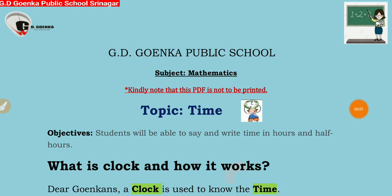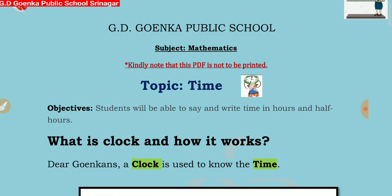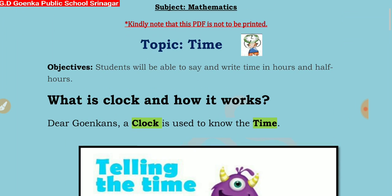Good morning, dear little koinkans. This is our math class and today's topic is time. So little koinkans, what do we use to know the time? We use a clock. Now the question is: what is a clock and how does it work?